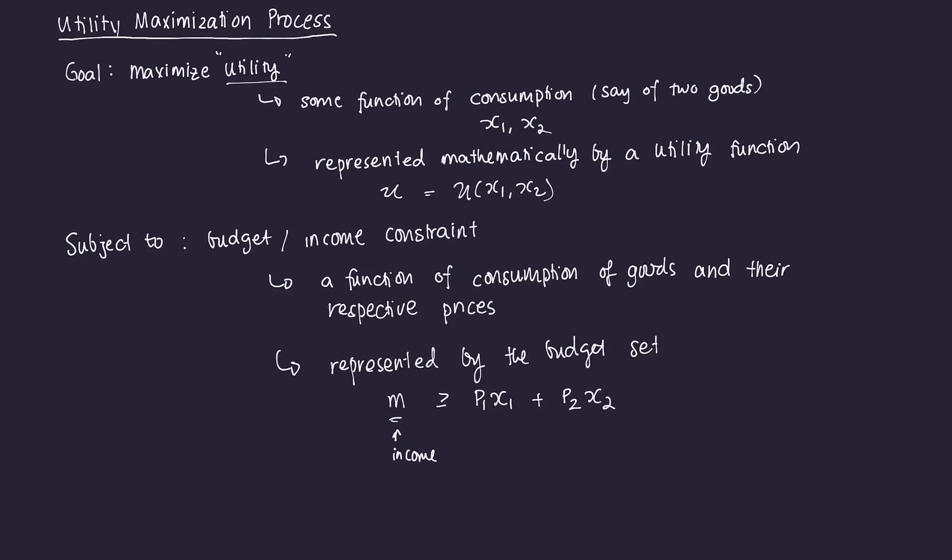In economics, we formalize the definition of happiness into a concept called utility. Utility is some function of consumption — in this case, let's say it's some function of the consumption of two goods: good one and good two. So x1 is the consumption of a consumer of good one, and x2 is the consumption of a consumer of good two.